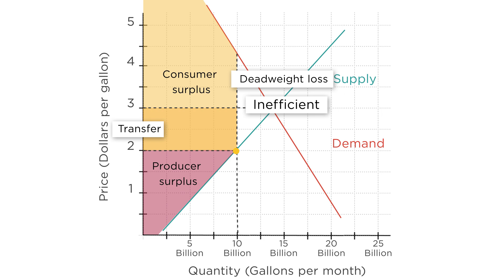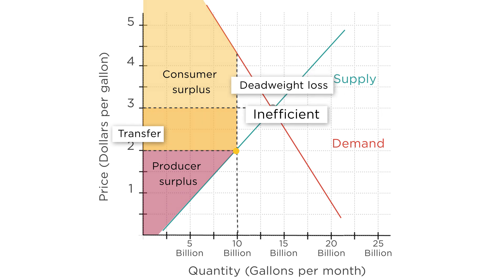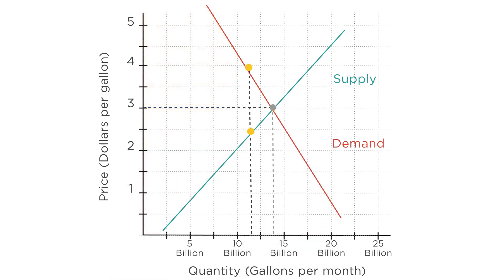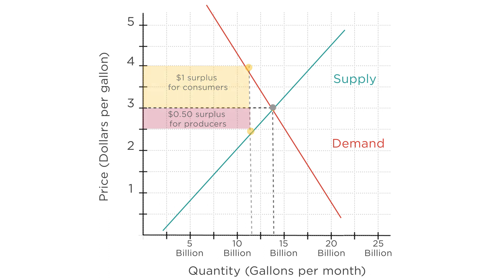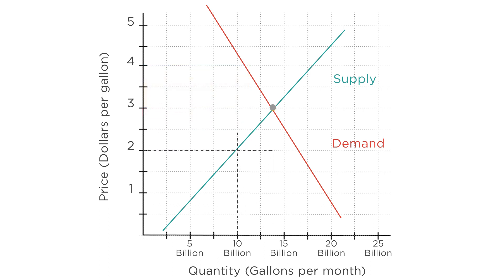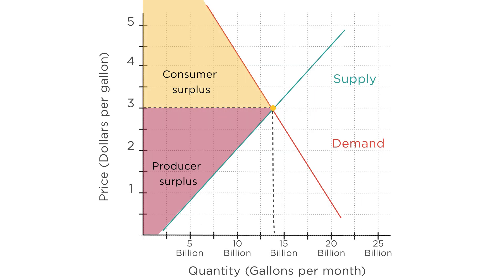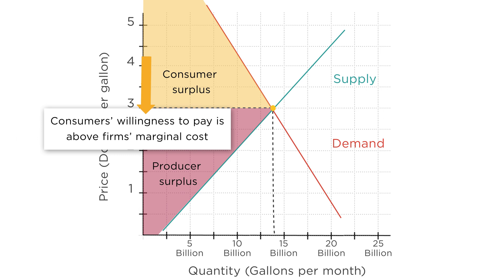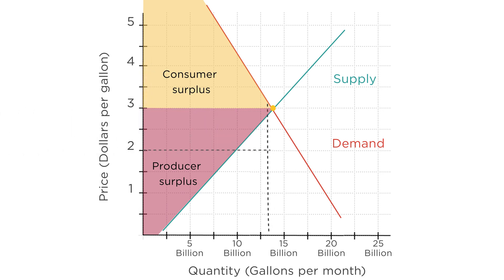Maximum efficiency, and therefore maximum welfare, is achieved when all mutually beneficial trades get made. Take the sale of the 12 billionth gallon of gas at a price of $3. This sale generated consumer surplus: consumers were willing to pay $4, but only had to pay $3, so they got a surplus of $1. And it generated producer surplus too: producers were willing to sell for only $2.50, but could sell for $3, so they got a surplus of $0.50. If we take that trade away — which is what happened when the government mandated a price of $2 — both sides are worse off, and society as a whole is worse off. Indeed, any trade to the left of the 14 billion gallon mark would make society better off, because for all those trades, consumers' willingness to pay is above the firm's marginal cost. That is, the value the consumer places on that gallon of gas exceeds the cost of the firms producing it. But with a lower price, some of these trades don't get made, and this is a total waste from society's perspective. Goods that are valued above what they cost to make are not getting sold.